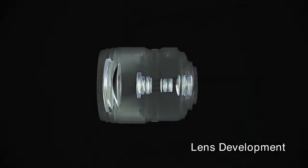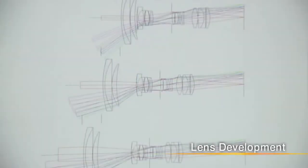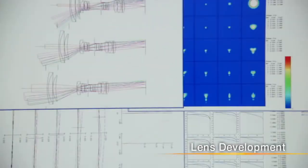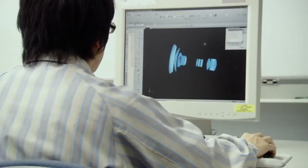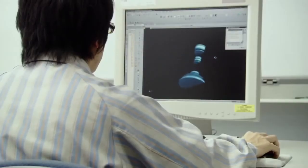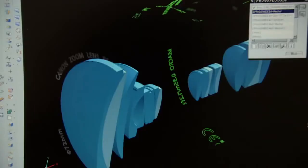To design a lens, Canon conducts tens of thousands of simulations involving everything from the type of materials used to the order and arrangement of lens components. Next, 3D computer-aided design is used to design the entire lens.